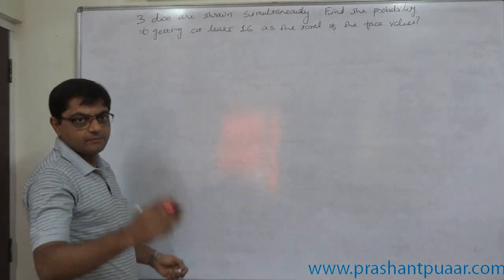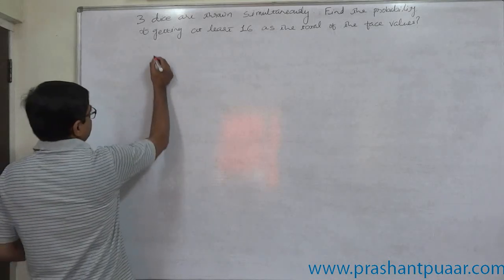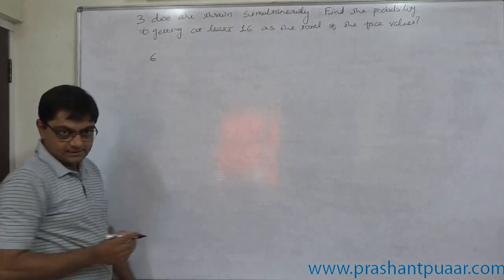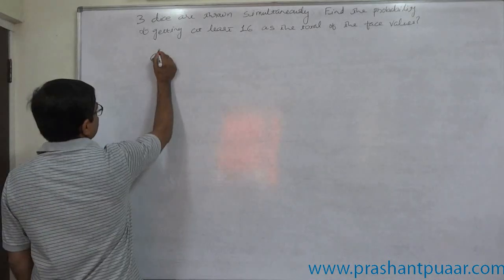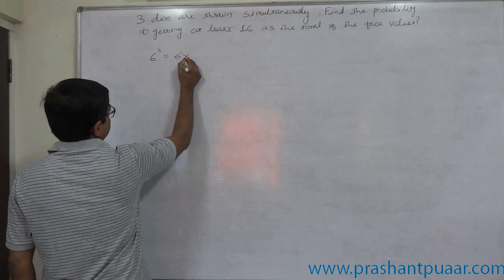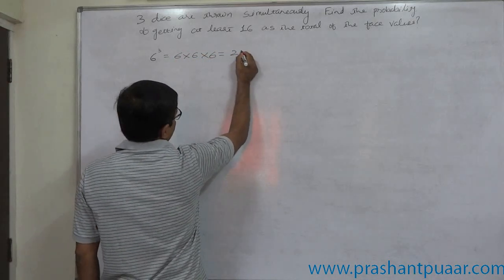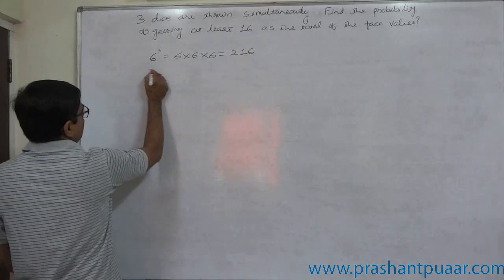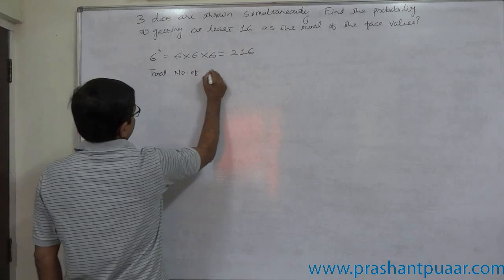How many possible outcomes are there on tossing a single die? That is 6. How many dice are we going to toss? Three. So it is 6 to the power 3: 6 × 6 × 6, which means 216 total number of possible outcomes.